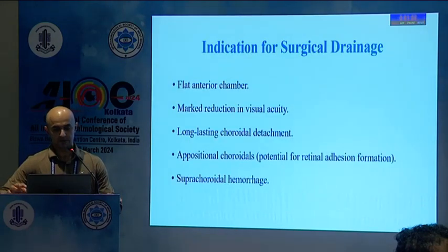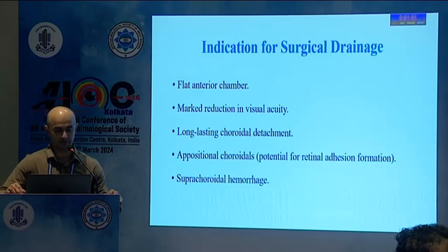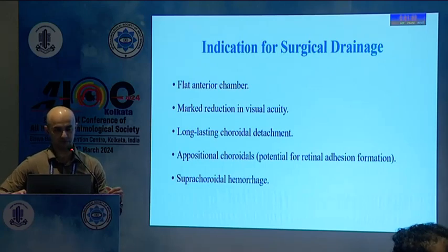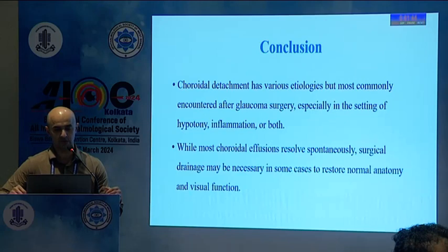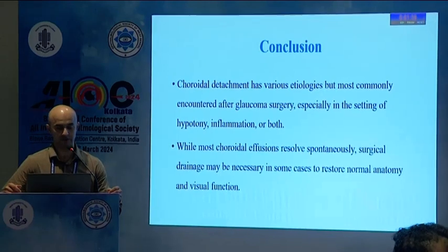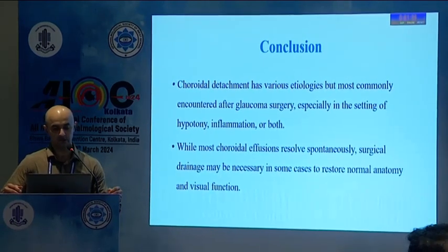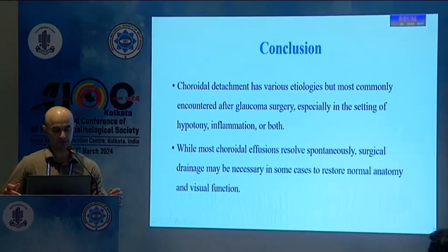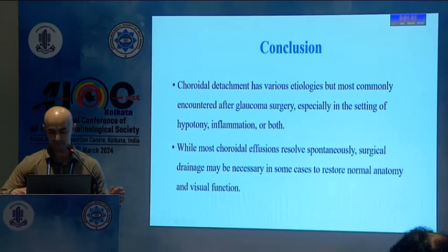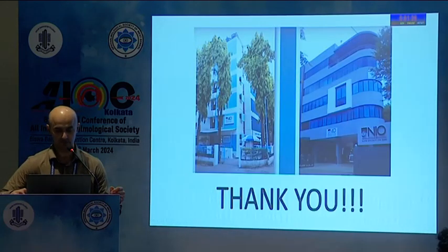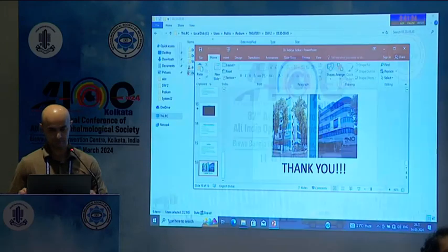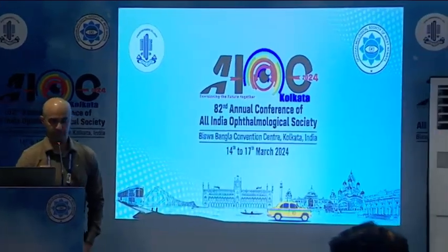The indications for surgery are flat intraocular chamber, marked reduction in visual acuity, long-standing choroidal detachment, oppositional choroidals, and supra-choroidal hemorrhage. These are the indications for drainage of supra-choroidal hemorrhage. It arises from various etiologies — most commonly glaucoma surgery, especially hypotony, inflammation, or both. Choroidal effusions can result spontaneously, but surgical drainage may be necessary in some cases, and can result in good visual acuity if timely treatment is carried out. Thank you.